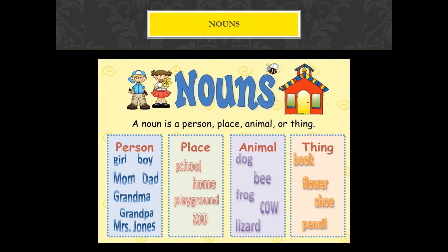It can be an animal — dog, bee, frog, cow, lizard. Or a thing — book, flower, shoe, pencil.